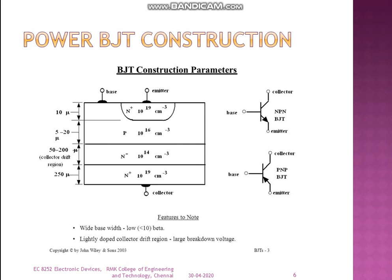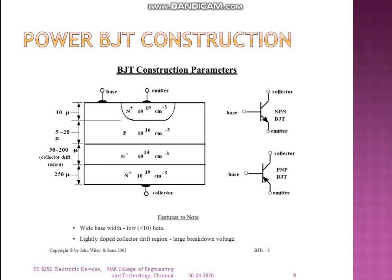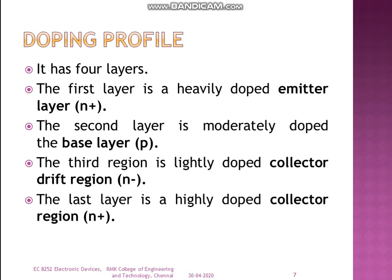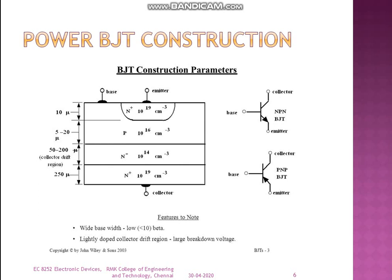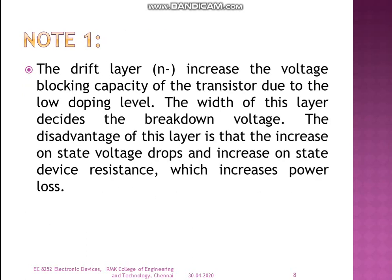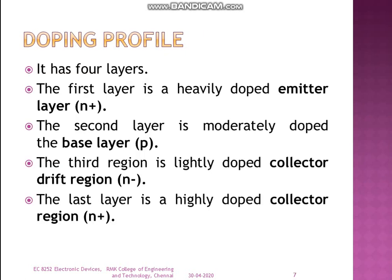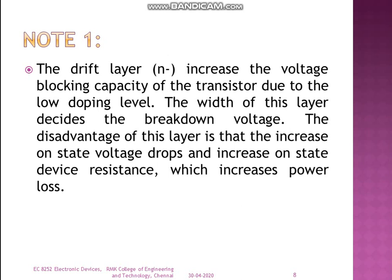Above the collector drift region, you have the base, and then the emitter at the top. Looking at the doping profile, it has four layers: the first layer — the emitter — is heavily doped. The second layer — the base — is moderately doped. The third region — the collector drift region — is lightly doped. The last region — the collector — is highly doped.